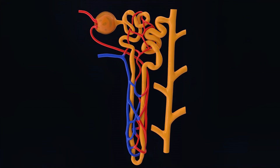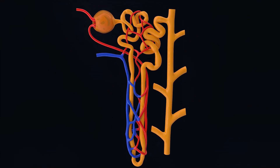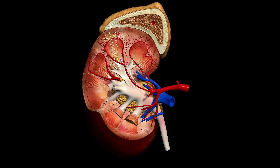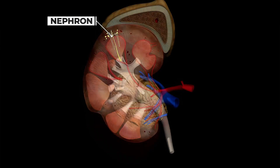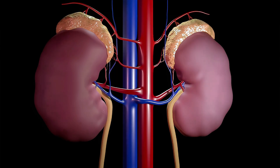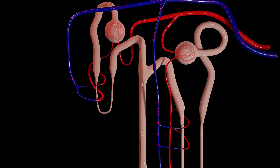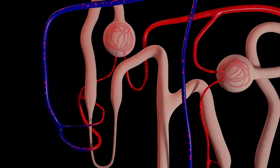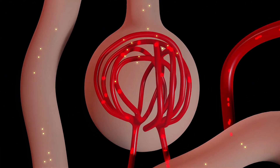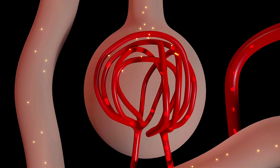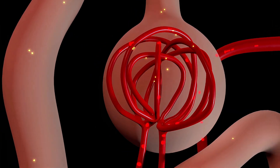The nephron is the main structural and functional unit of our kidneys. Each kidney has about 1 million nephrons. When blood enters the kidney, it gets filtered in these nephrons. This means that the functions we study about the kidney are actually performed by the nephrons inside the kidney.